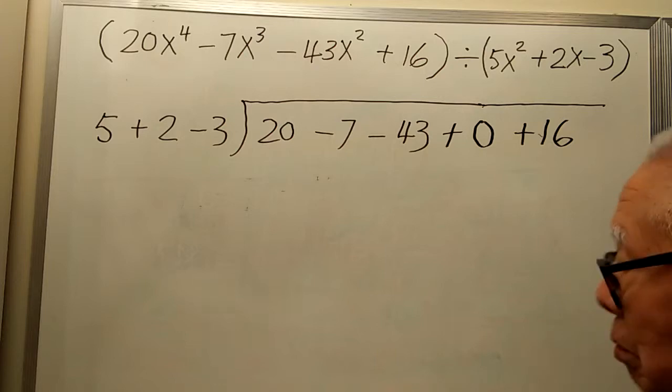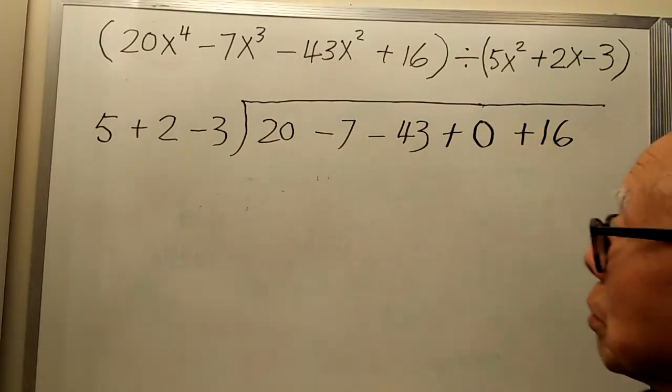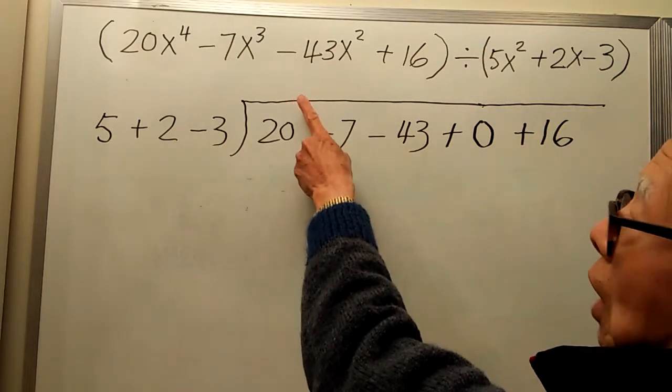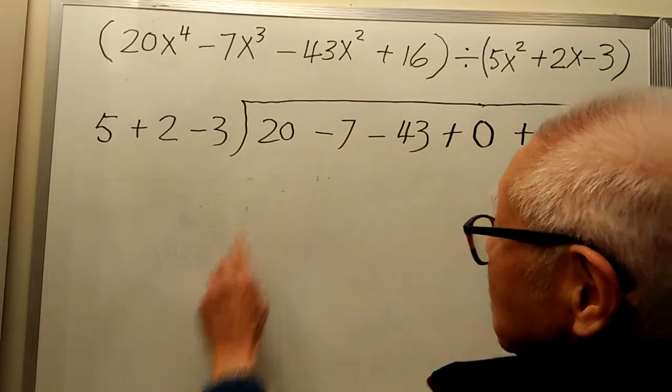Now we do it. What times 5 gives you 20? 4.